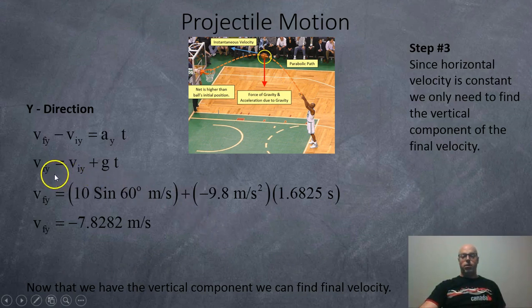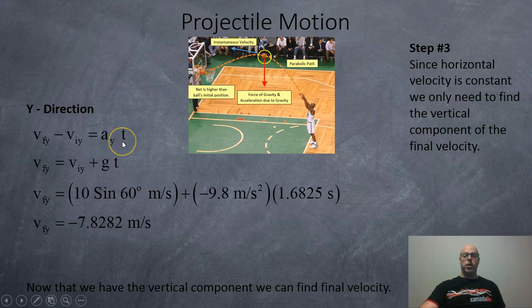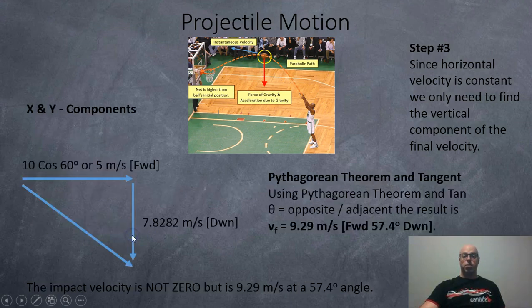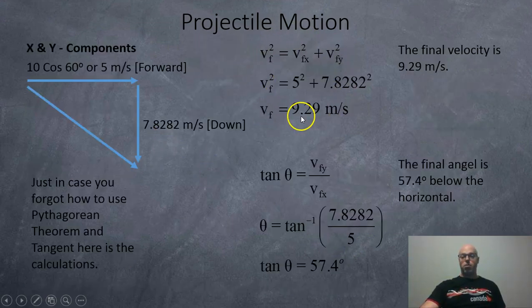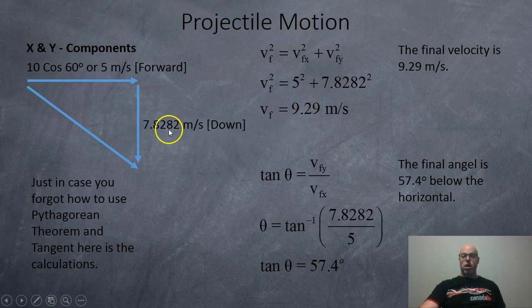Now for the y velocity, once again, your vfy, subtract your viy equals ayt. Rearrange that, plug in our numbers. So we got 10 sine 60 going up, negative 9.8 meters per second squared coming down for 1.6825 seconds. So the ball is going to be coming downwards at 7.8282 meters per second. It was moving forward at 10 cos 60 or 5 exact, coming down at 7.8282. And if we use Pythagorean theorem, the ball will swish through the net at 9.29 meters per second at a 57.4 degree angle. So 5 squared plus 7.8282 squared, square root it, we get 9.29 meters per second. Opposite 7.8282 divided by adjacent 5, shift tan that answer, and we get our final angle of 57.4 degrees.